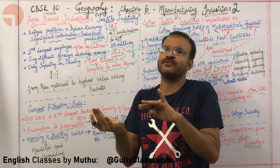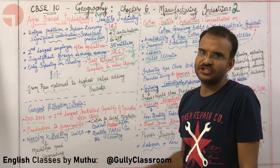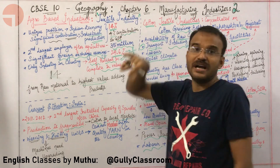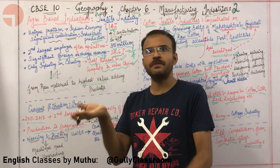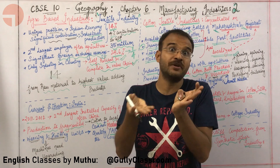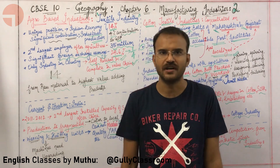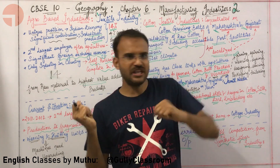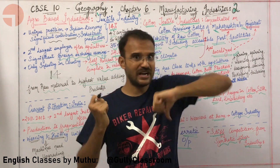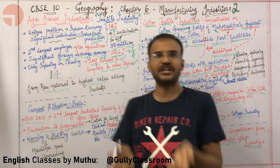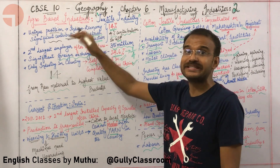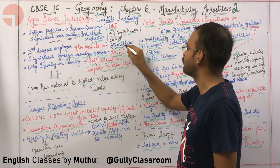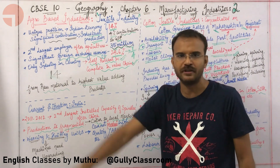Textile industries are the second largest employer after agriculture. How many people are they employing? Think of the numbers before and after 4: that's 3 and 5 — so 35 million people. Textile industries employ 35 million people, making it the second largest employer after agriculture.